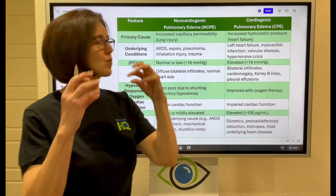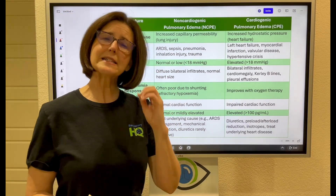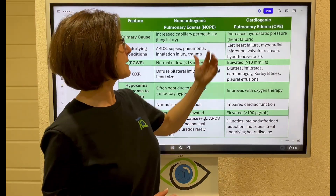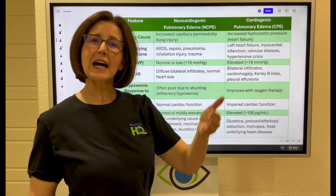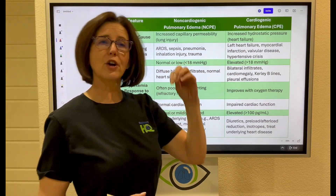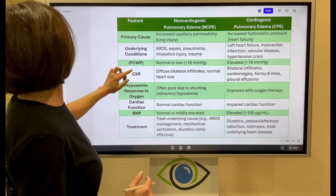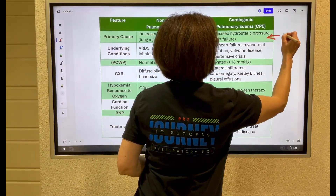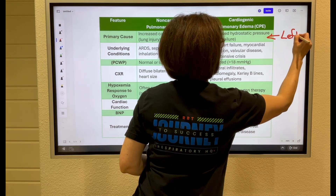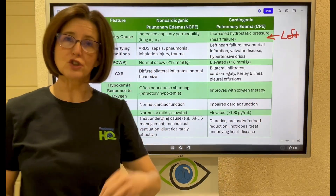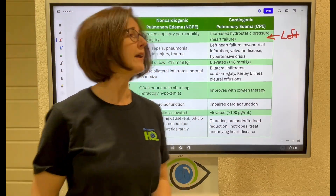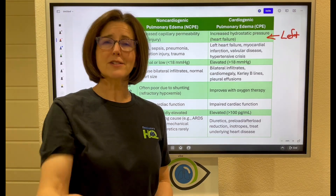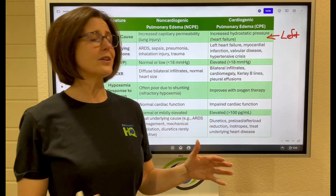When we say cardiogenic pulmonary edema, we're talking about increased hydrostatic pressures that occur from heart failure — predominantly left-sided heart failure, congestive heart failure. If you're taking the NBRC exams, you are going to see left ventricular failure and associated pulmonary edema on that exam quite a bit.